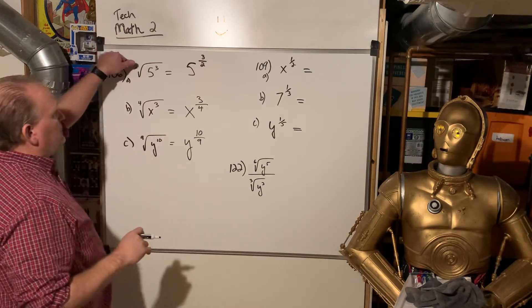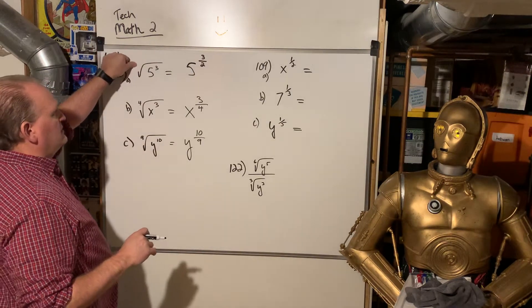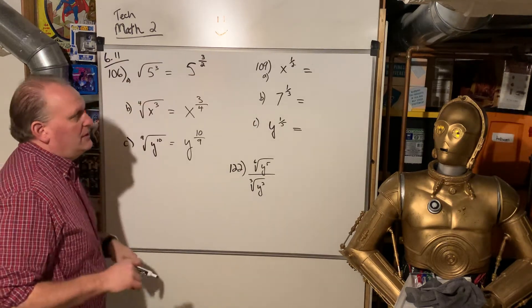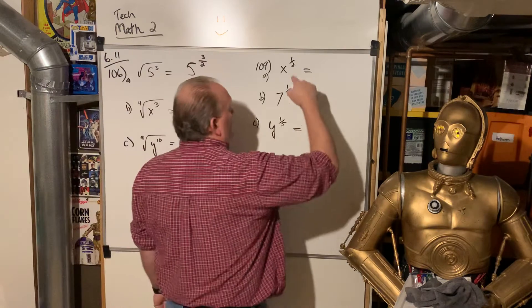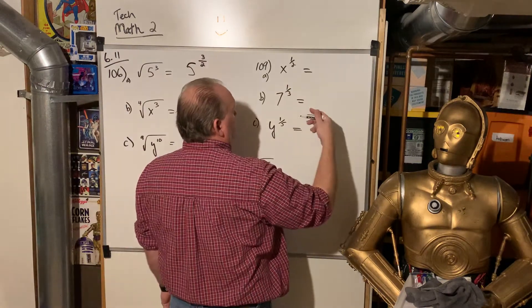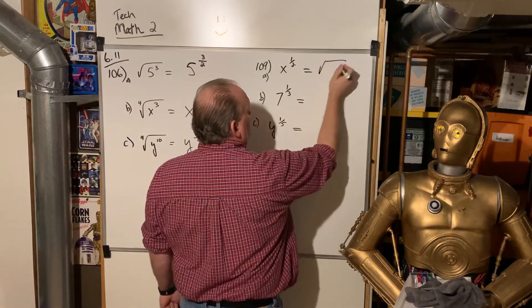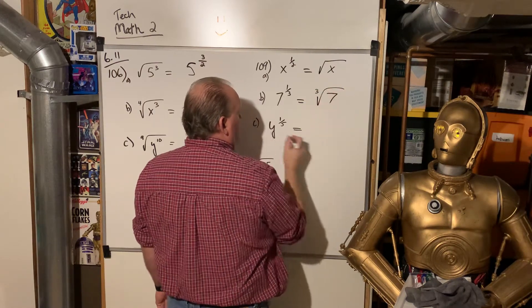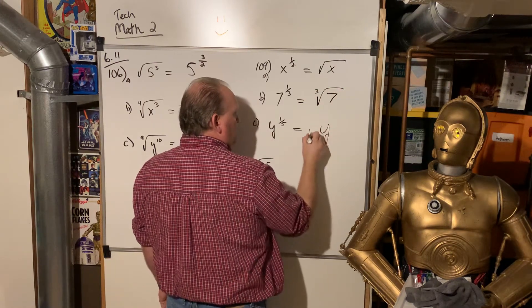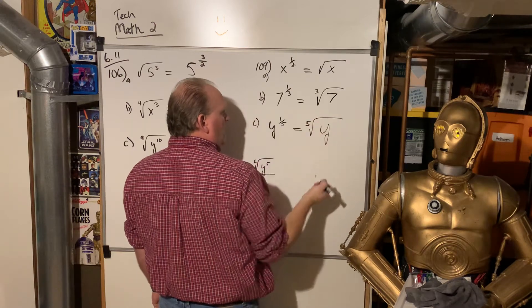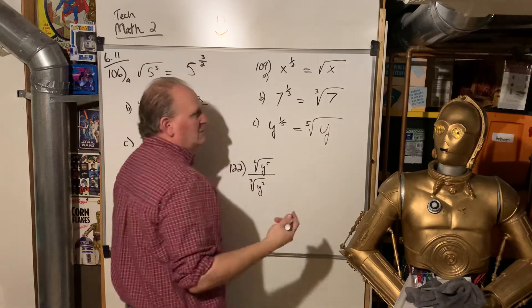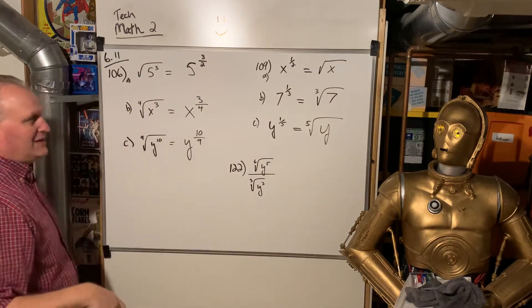So then let's, and again, with square roots, we don't usually write the 2 there, so you just have to memorize when there's nothing there, there's a 2 in the denominator. So let's go the other way. What if they have it as fractions, and they want us to write it in radical notation?